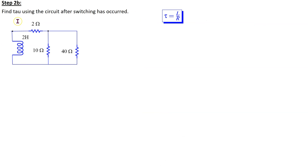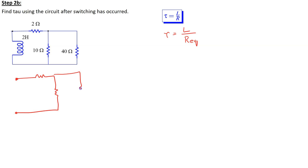The next step is to find tau, and this is done using the circuit after switching has occurred. This circuit is shown here. We can see that we have a single inductor and a network of resistors. Thus, the time constant tau is given by L over R equivalent, where R equivalent is the equivalent resistance seen by the inductor. This means that we need to find the equivalent resistance. We remove the inductor and the resistance seen looking into these terminals is R equivalent.